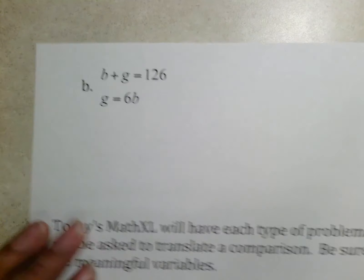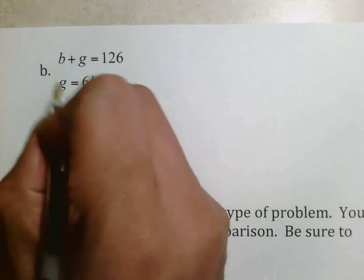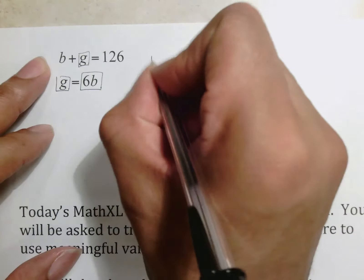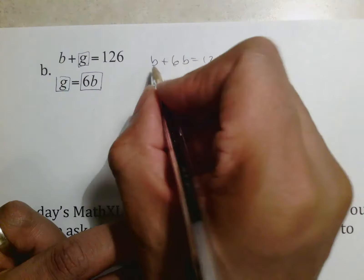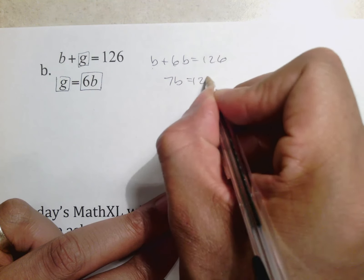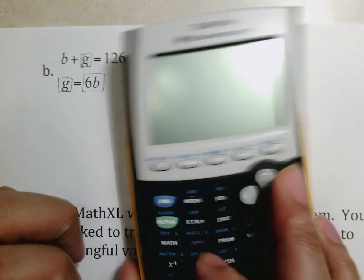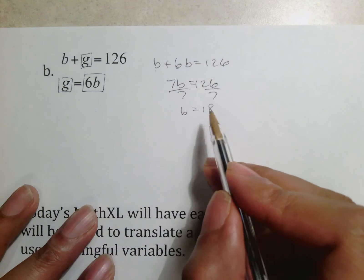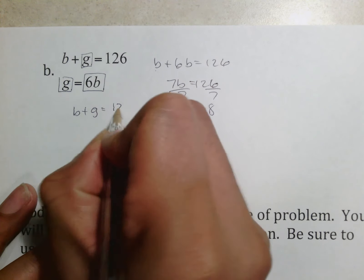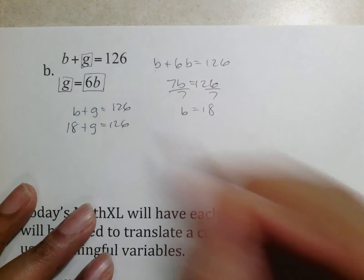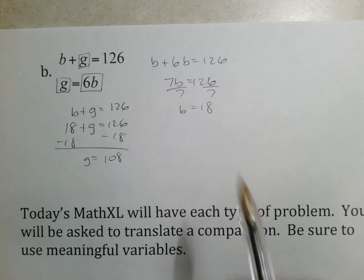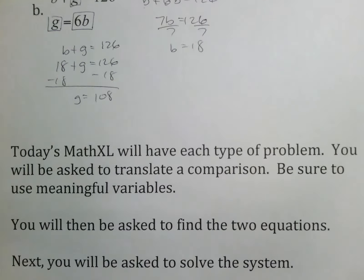For example b: b + g = 126 and g = 6b. Since g is isolated, substitute 6b in for g: b + 6b = 126, so 7b = 126. Divide both sides by 7 to get b = 18. Then 18 + g = 126, subtract 18, giving g = 108. So b = 18 and g = 108.